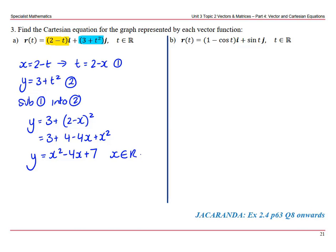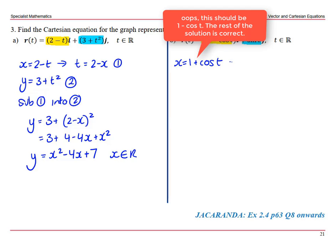Next one, again, break it up into components. x is going to be 1 plus cos t. Rearrange it to get cos t on its own, and that would be cos t equals 1 minus x, equation 1. y equals sine t, equation 2.